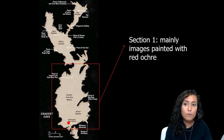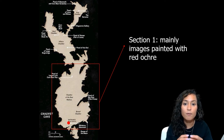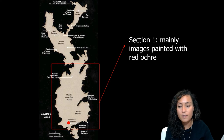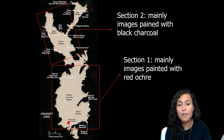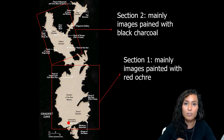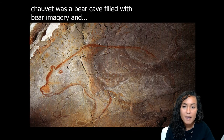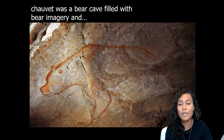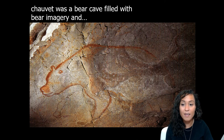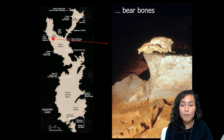Chauvet is divided into two major sections. The first section includes images mostly painted in red, with only a few black or engraved images. Section two contains animals mostly painted in black. So we see a clear concentration of black and engraved images in section two and red images in section one. Chauvet was a bear cave — a place where these powerful animals hibernated — and it has been suggested that human visitors came there to acquire the power of these large beasts. Archaeologists found more than 30 intentionally placed bear skulls surrounding slabs, creating a kind of bear shrine.